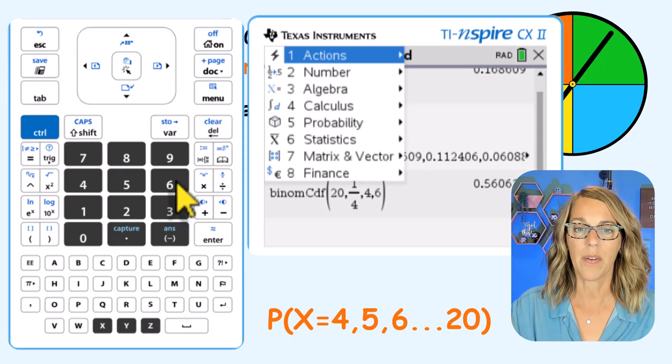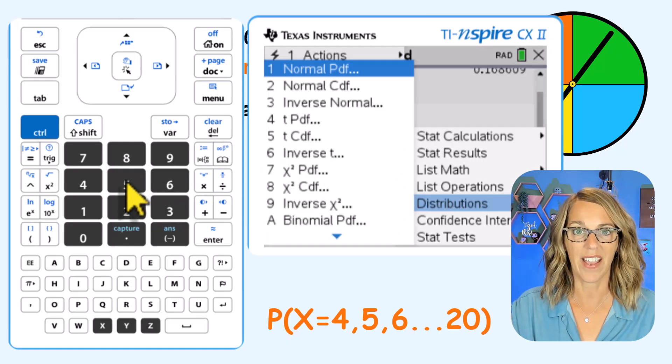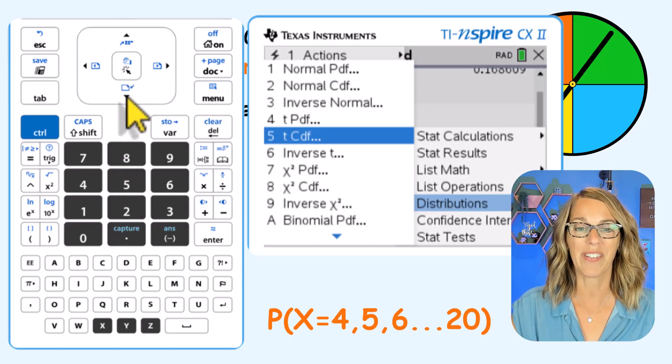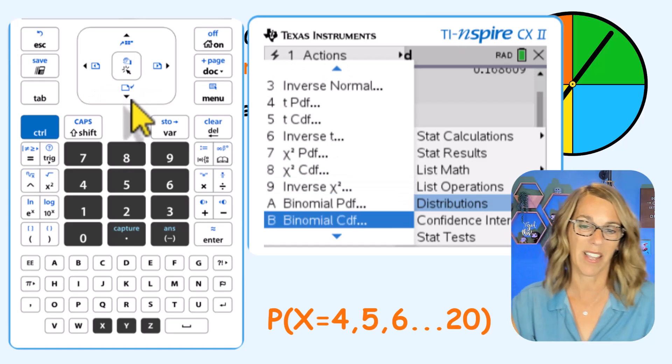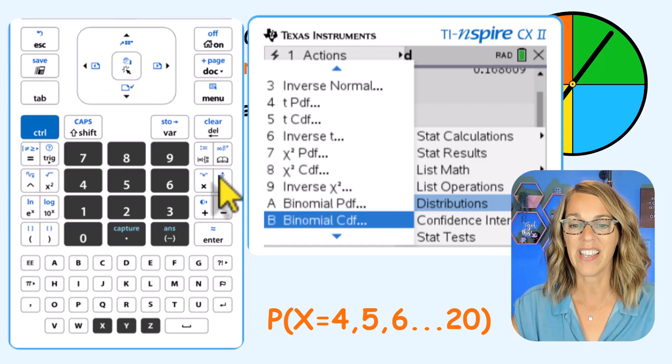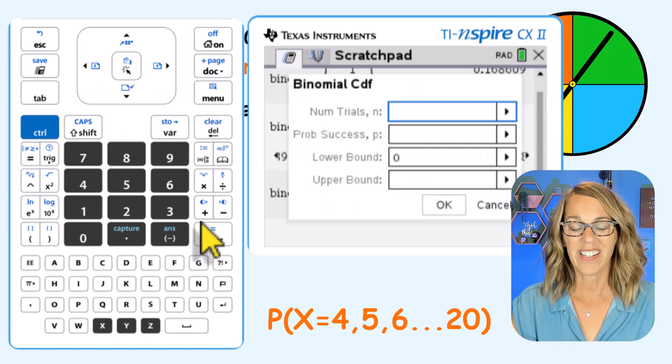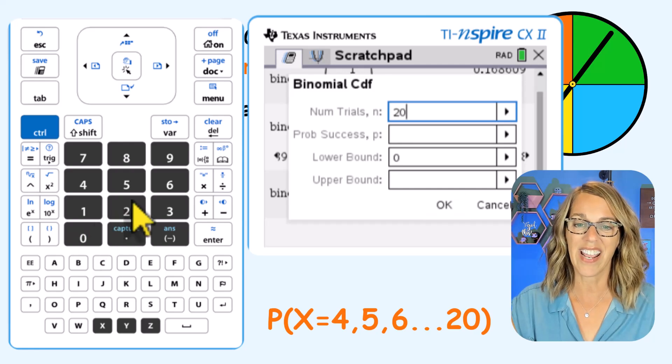So we've got menu number six, number five, are you getting faster at this? And then I want that binomial CDF, you could type the letter B, but I'm just going to go down here to B, and then enter. And number of trials is still the same.